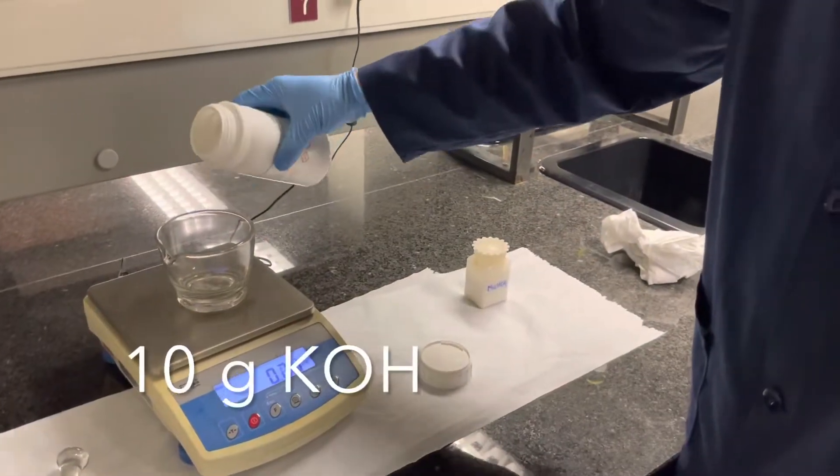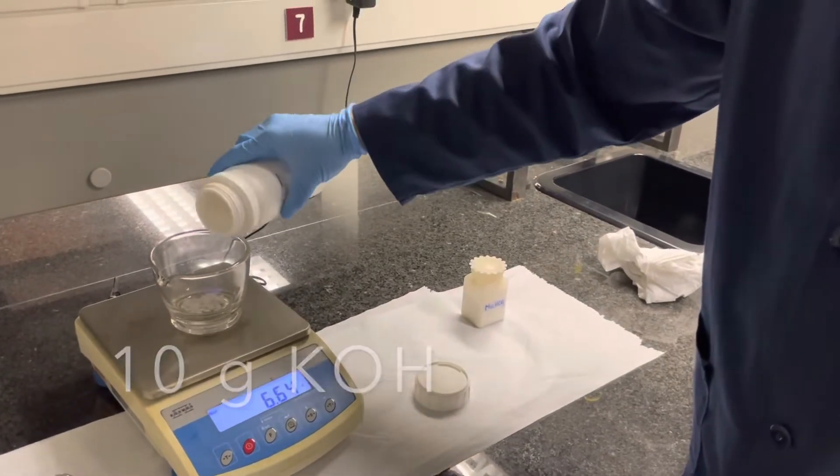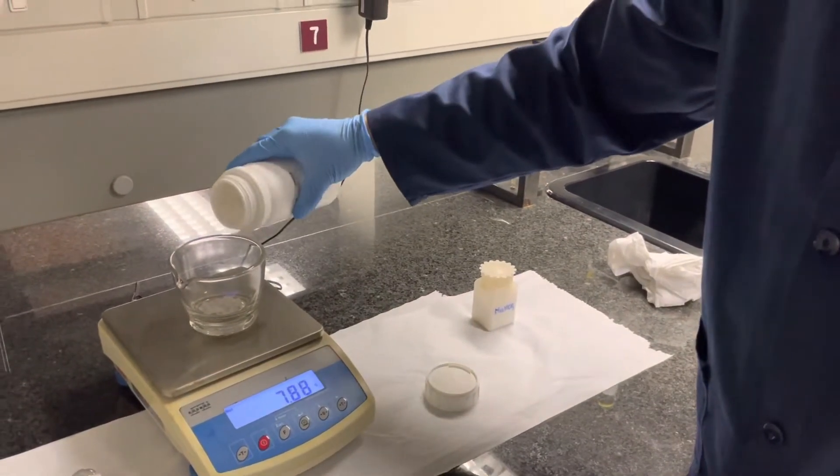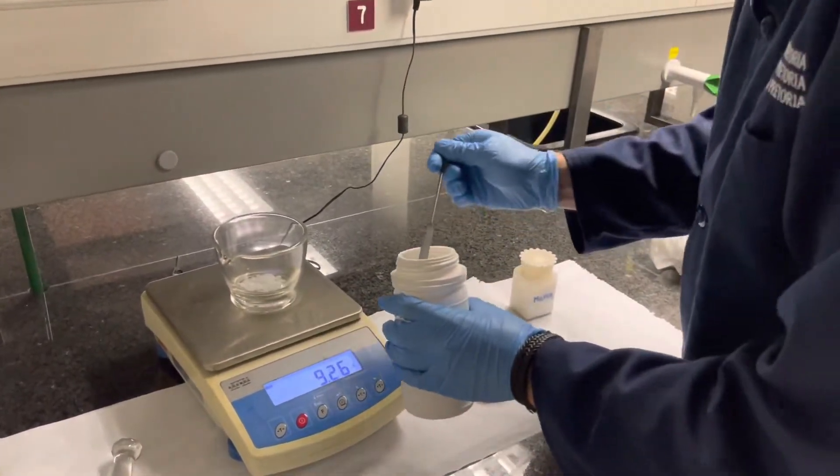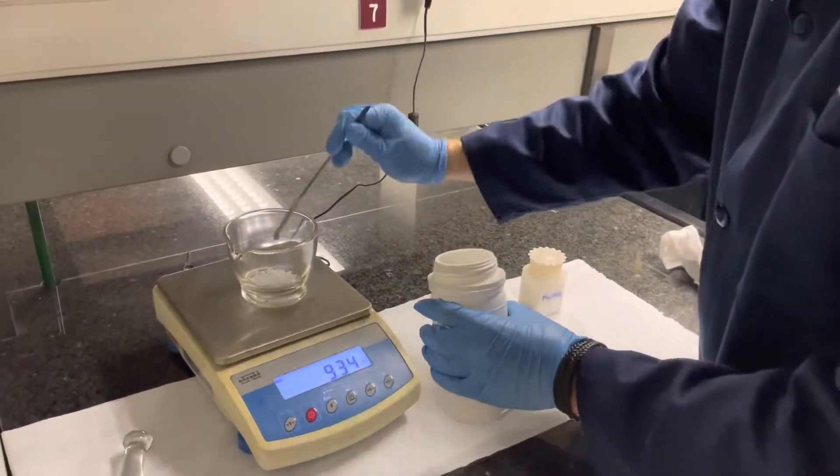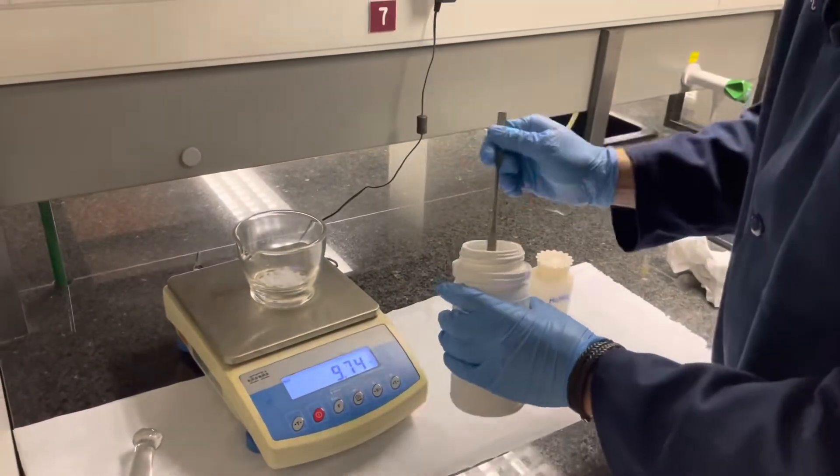Next, try to work as accurately as you possibly can to weigh 10 grams of potassium hydroxide pellets. Around 10 grams, in other words, within 10.5, no more than 10.5 grams should be sufficient.